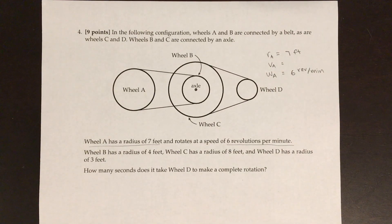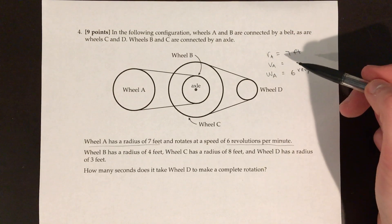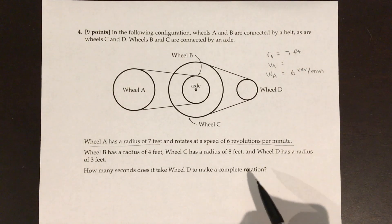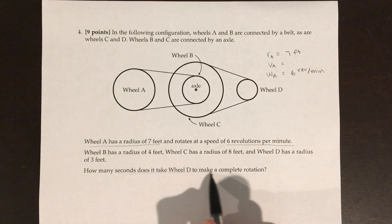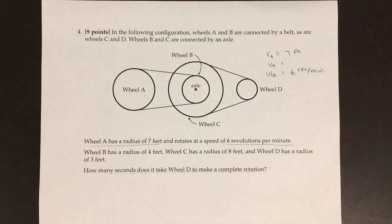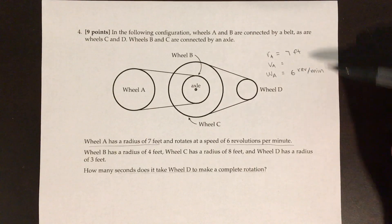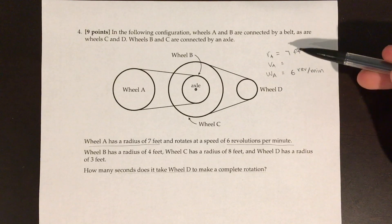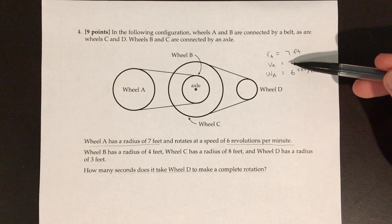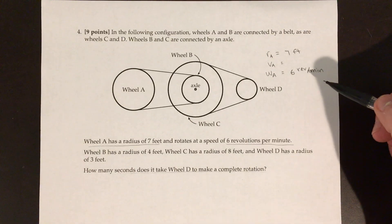Your goal is to go through all three of these things — radius, linear speed, and angular speed — for each wheel. If you do that, you will eventually get the amount of seconds it takes wheel D to make a complete rotation. The nice thing is that once you have two of the known values, whether it's the radius and the velocity, or the radius and omega, you can find the third.